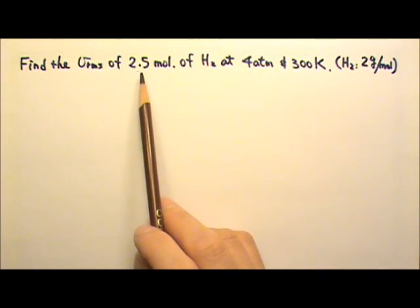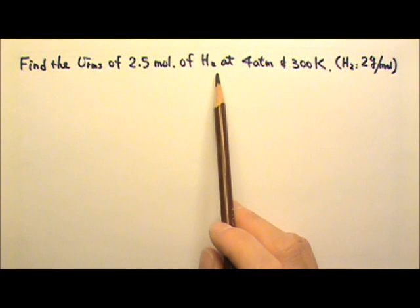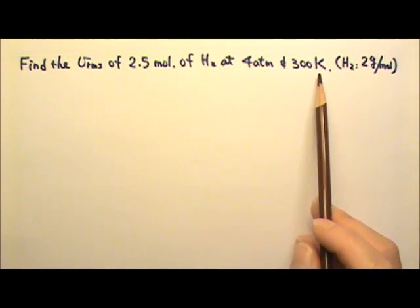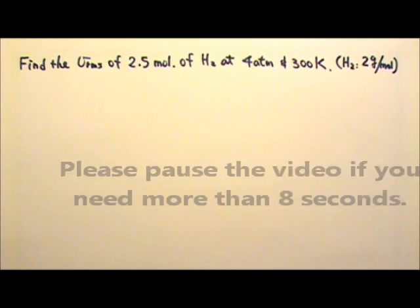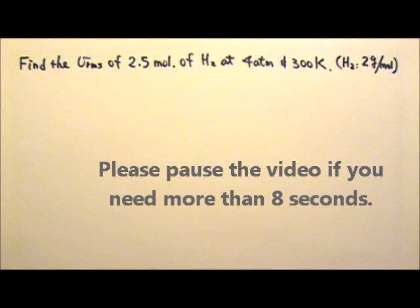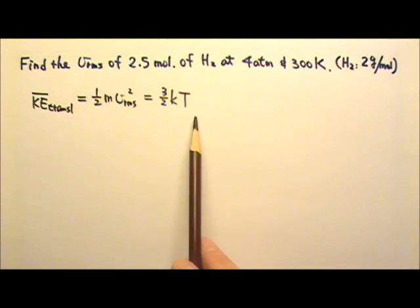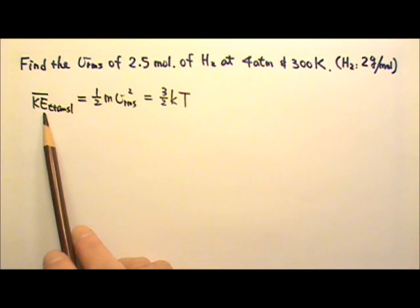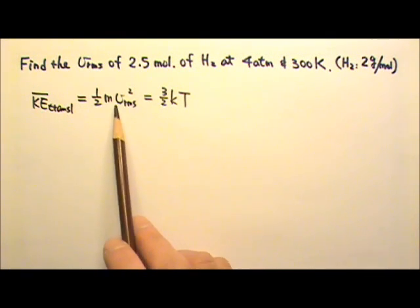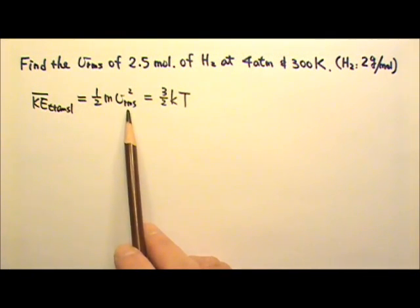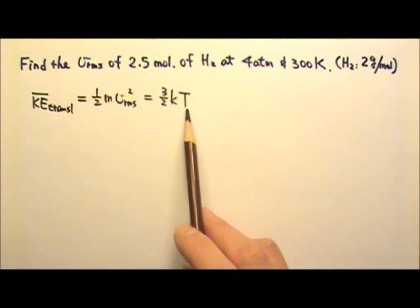Find the root-mean-square speed of 2.5 moles of hydrogen gas at 4 atmospheres and 300 Kelvin. The kinetic theory equation we derived says the average translational kinetic energy is 1/2 mv² where v is the root-mean-square speed equals 3/2 kT.